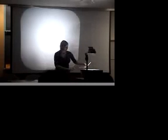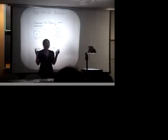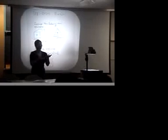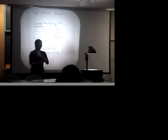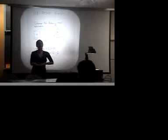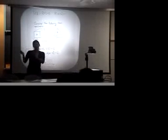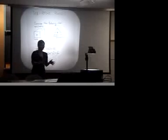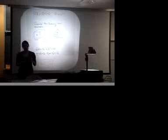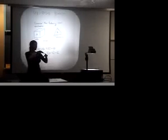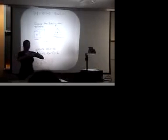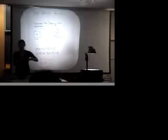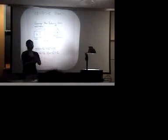One thing worth mentioning: there's a question about what congruence means in this context — specifically, whether reflections are allowed. When rearranging polygons, reflecting is fine since you can always flip a 2D piece over. In 3D, some people argue reflections should be allowed for analogy with the 2D case, while others say no. In this problem, it turns out not to matter: if you can dissect and rearrange something using reflections, you can do it without reflections, because all pieces can be chosen to have a plane of symmetry.